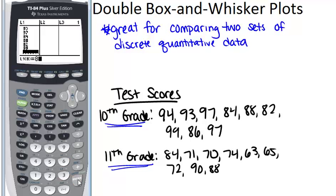82, 99, 86, and 97. Remember that the numbers don't need to be in order. The calculator can deal with that so you can just plug it in as it's given to you.